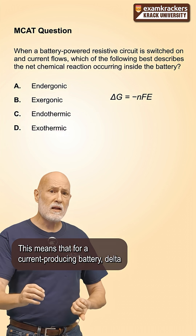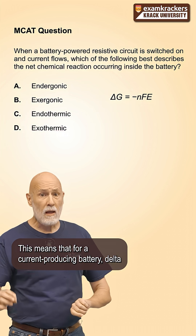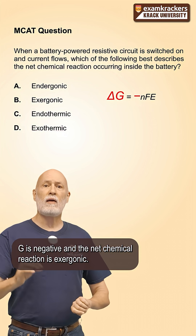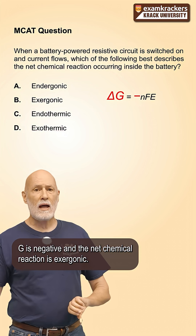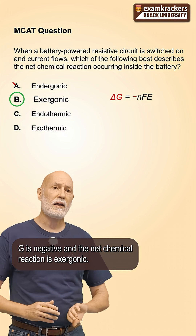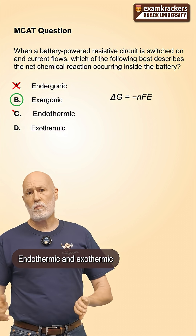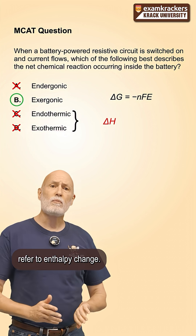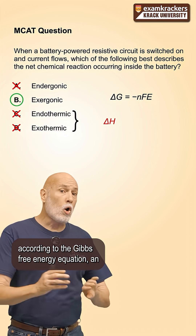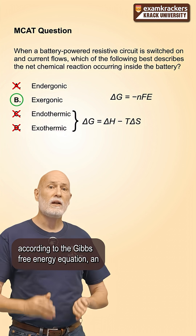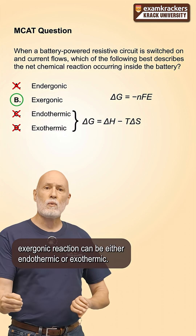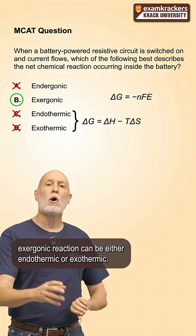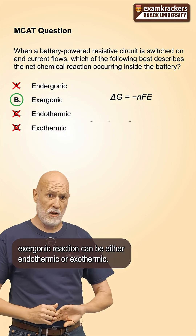This means that for a current-producing battery, delta G is negative and the net chemical reaction is exergonic. Endothermic and exothermic refer to enthalpy change. According to the Gibbs free energy equation, an exergonic reaction can be either endothermic or exothermic.